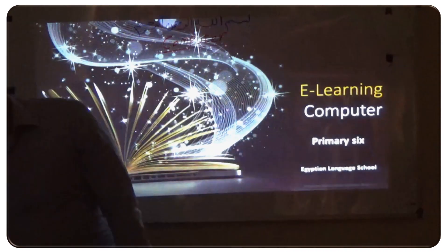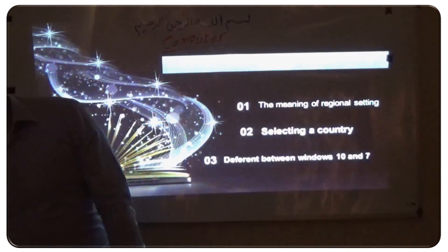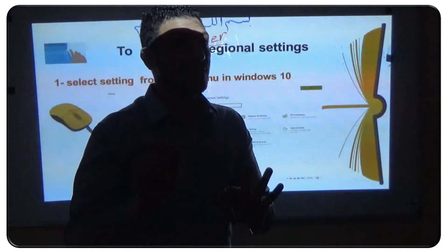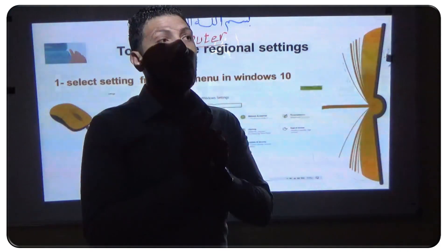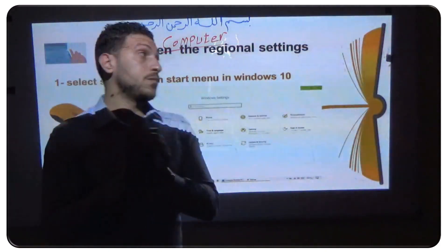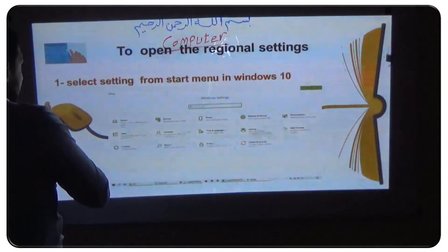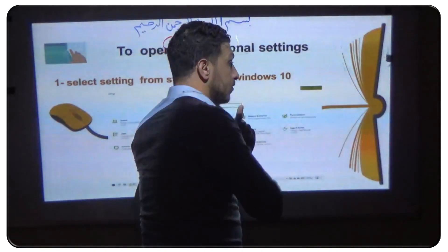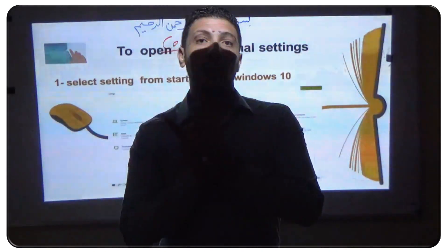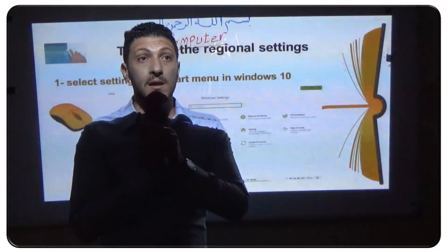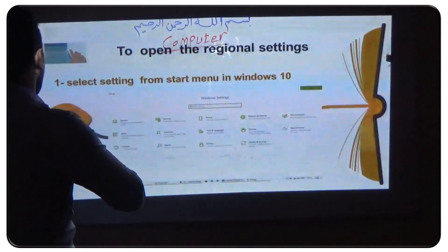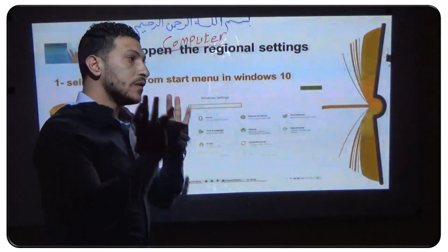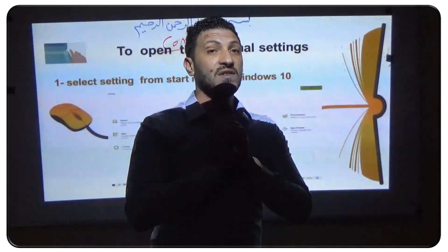First, I want to tell you how to open the regional settings for changing and saving changes. To open in Windows 10, I will show you how you can open it in Windows 10 and Windows 7. First, select Settings from the Start menu, then Settings from Control Panel from the Start menu.